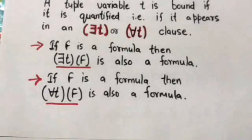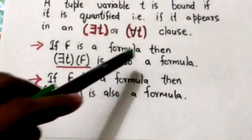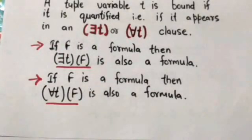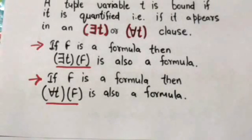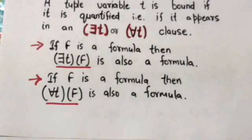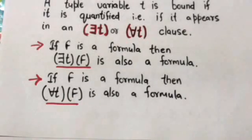If f is a tuple relational calculus formula, then the expression ∃t(f) is also a formula, where t is a tuple variable. This formula evaluates to true if the formula f evaluates to true for at least one tuple assigned to free occurrences of tuple variable t in f.